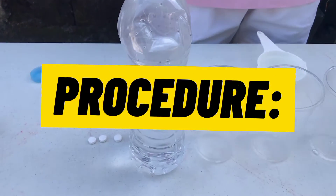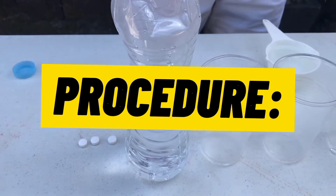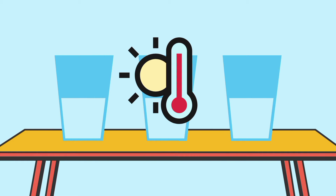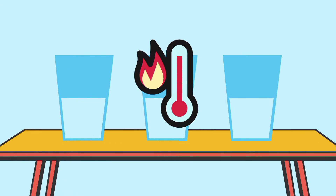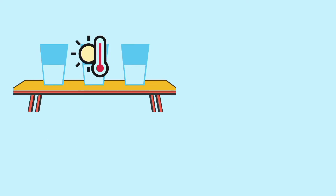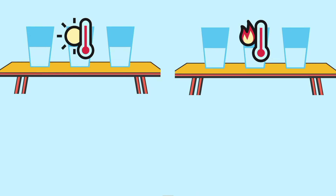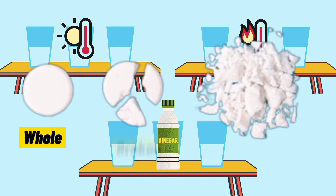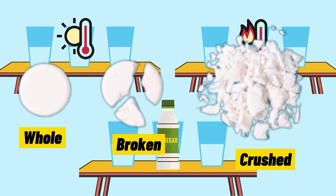Let's proceed to the procedure. Prepare the cups that we will be using in this activity. The cups will be assigned with water at room temperature, hot water, and room temperature vinegar. For each assigned liquid, there is an equivalent tablet to be placed inside: whole, broken, and crushed.